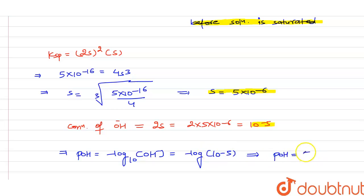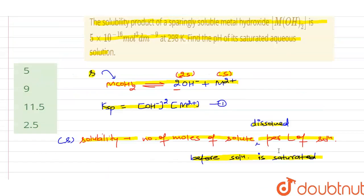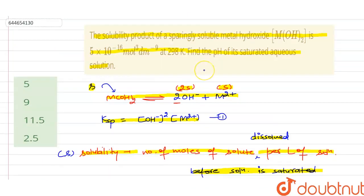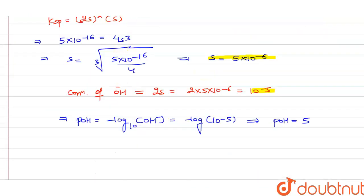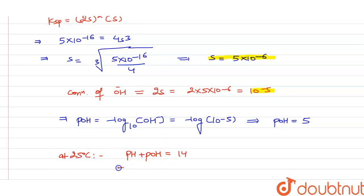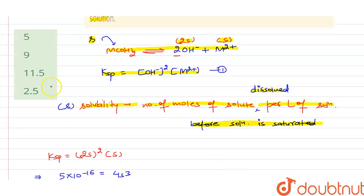The question asks for pH. At 25°C, pH + pOH = 14. So pH = 14 − 5 = 9. The answer is the second option.